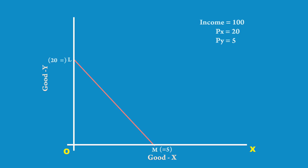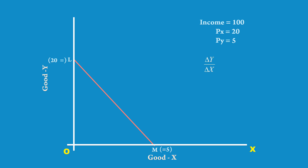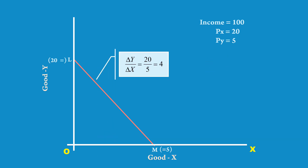LM is the price line. Now, how to measure the slope of the price line? The geometrical method suggests delta Y divided by delta X — that is, change in Y by change in X. In our case, Y changes from 0 to 20, hence delta Y is 20. X changes from 0 to 5, so delta X is 5. 20 divided by 5 gives us 4. This is how we find the slope of the price line.